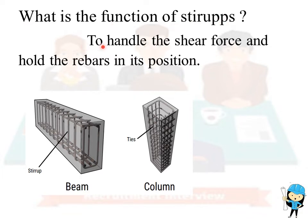The function of stirrups is to handle the shear force and hold the rebar in its position. There are two types of stirrups: two-legged and four-legged. The diameter of stirrups varies from 6 to 10 mm.